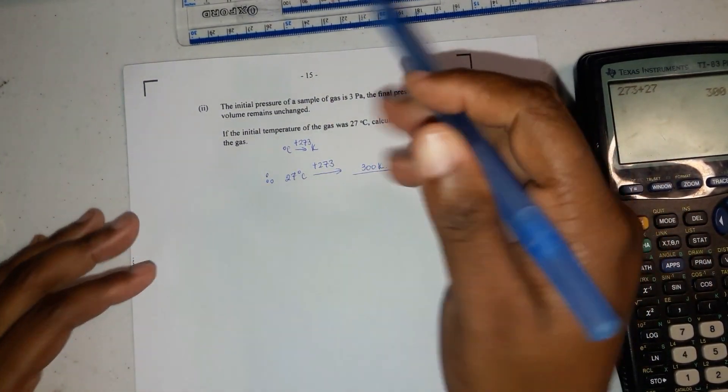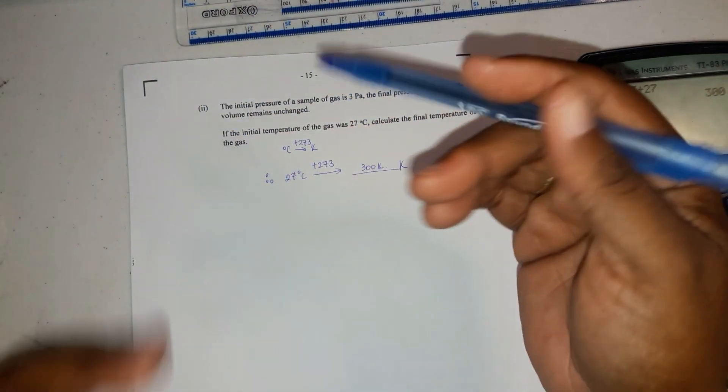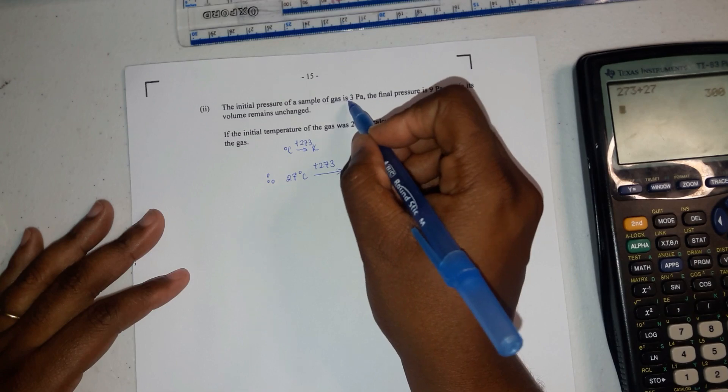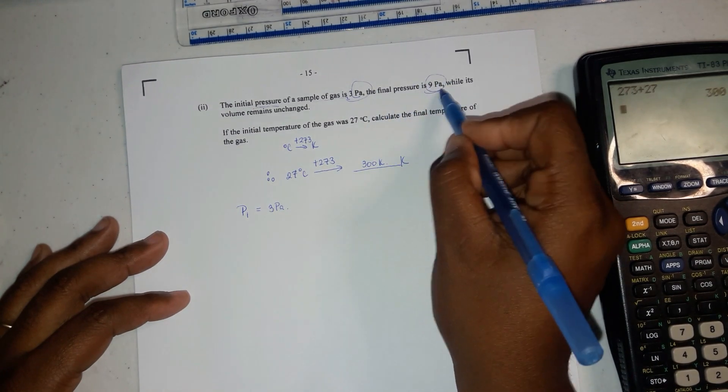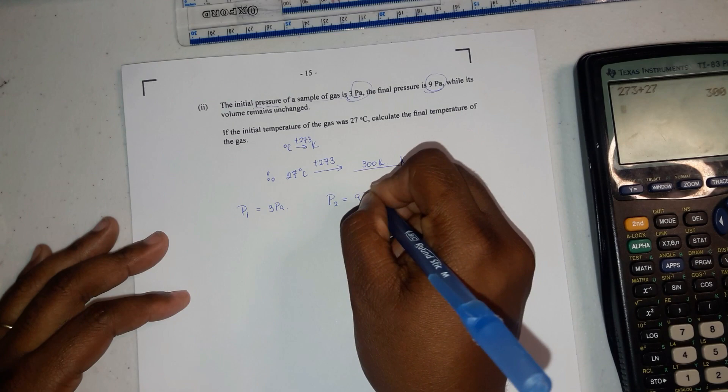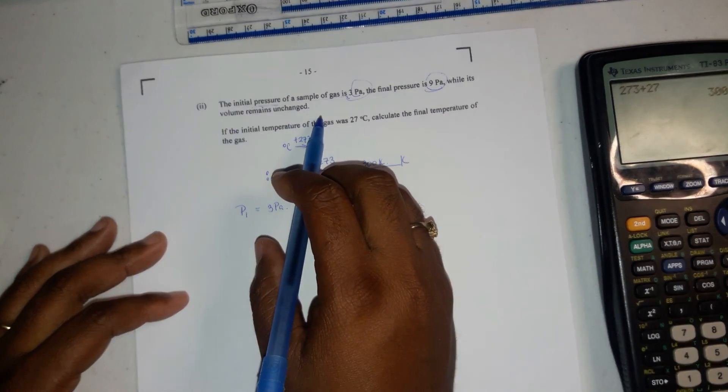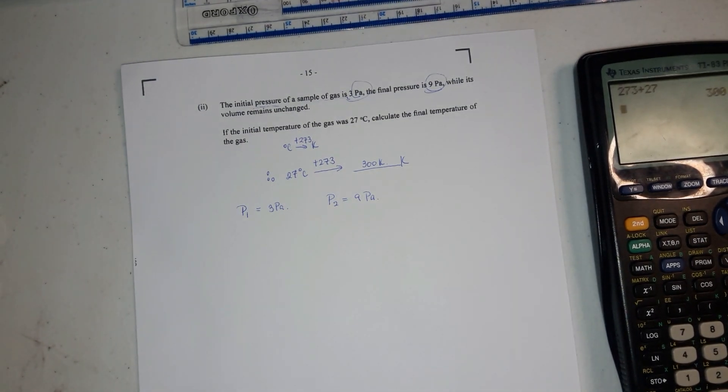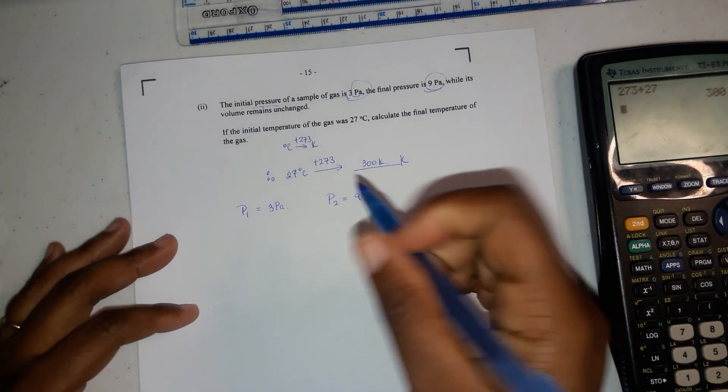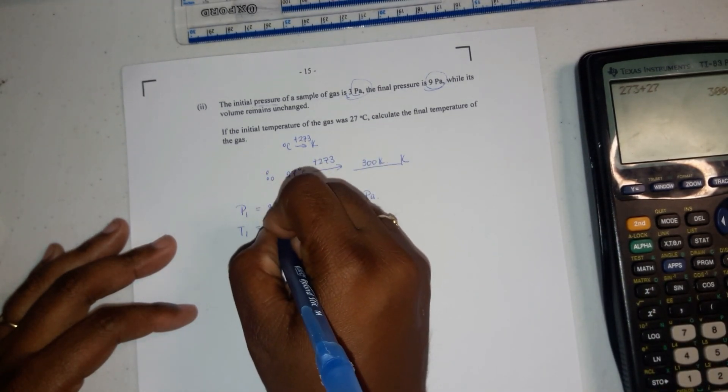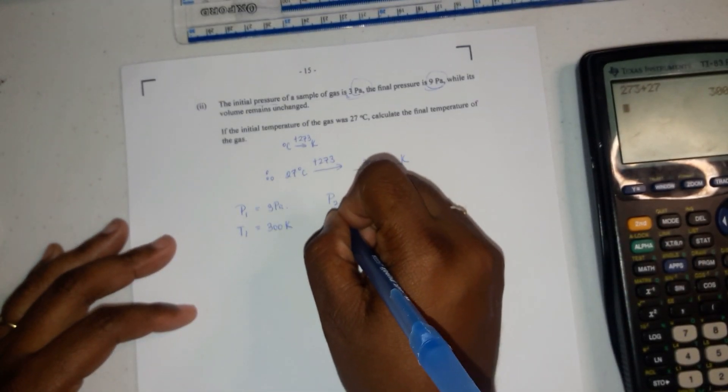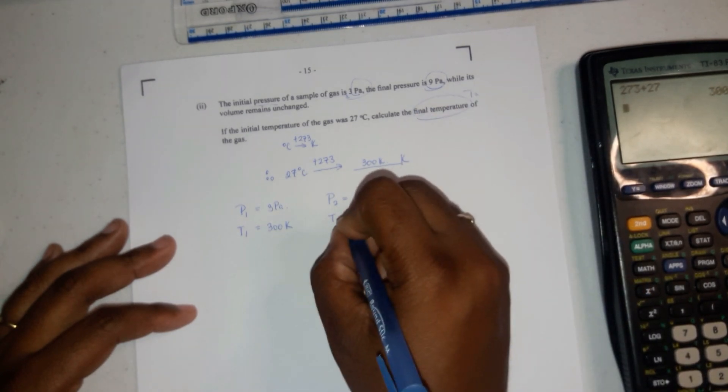What I would do is list this stuff over. If you're doing all the calculations, I'm listing it so that I know what I have to use. The initial pressure of a sample of gas is 3 pascals, so we're going to label everything that's initial 1. Pressure 1 is 3 pascals. The final pressure is 9 pascals, so pressure 2 is 9 pascals. Its volume remains unchanged, so we don't have anything for volume because volume is constant. If the initial temperature of the gas is 27 degrees, which translates to 300 Kelvins, T1 equals 300 Kelvins. Then T2, calculate the final temperature, which is T2. So T2 is equal to x.